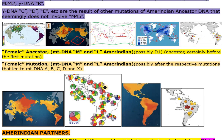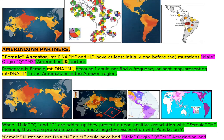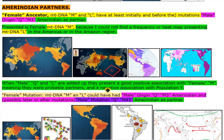Amerindian partners. Female ancestor MTDNA-M and L have at least initially, and before the mutations, male origin Q, M3 Amerindian as partner. Presented as female MTDNA-M because I could not find a frequency or heat map presenting MTDNA-L in the Americas or in the Amazon region. When male Q and C are added up they present a good association with female M, meaning they were probable partners.